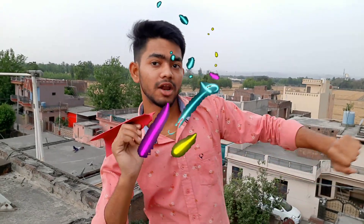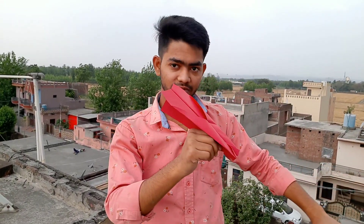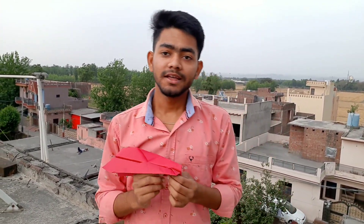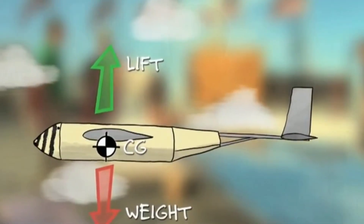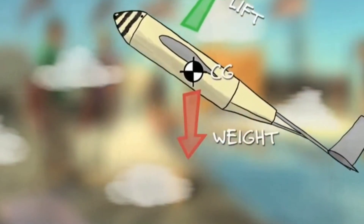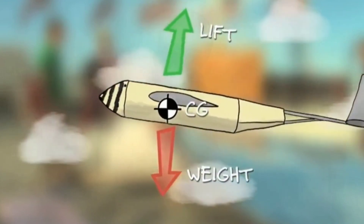You have always seen that we take our aeroplane in a direction so that it should go up. So that's why we angle it — the air comes from the wings, and the wings push the air downward, putting force on the upper side, which comes from Newton's third law: every action has an equal and opposite reaction.